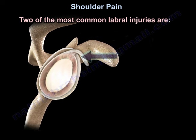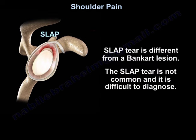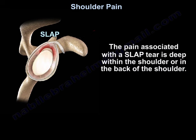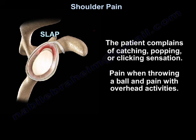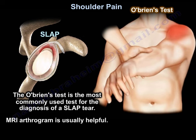Two of the most common types of labral injuries are the SLAP tear and the Bankart lesion. SLAP tear is different from a Bankart lesion — it is not common and it is difficult to diagnose. The SLAP tear occurs at the point where the tendon of the biceps muscle inserts on the labrum. The pain is deep within the shoulder or in the back of the shoulder. The patient complains of catching, popping, or clicking sensation, pain when throwing a ball, and pain with overhead activities. The O'Brien test is the most commonly used test for diagnosis, and MRI arthrogram is usually helpful.